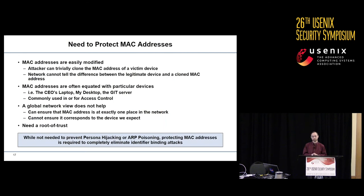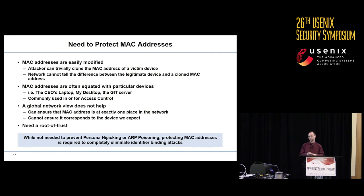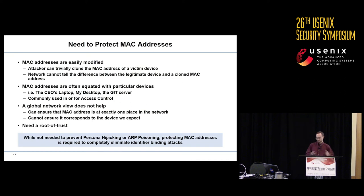The final thing we wanted from SecureBinder was to protect MAC addresses. MAC addresses are easily modified — attackers can trivially clone the MAC address of victim devices, typically with a one-line command on most operating systems, and the network can't tell the difference between the legitimate device and the cloned MAC address. This is important because MAC addresses are often equated with particular devices — the CEO's laptop, a desktop computer, the Git server — and this commonly ends up being used for access control, possibly indirectly through a static DHCP lease and an IP address. A global view can ensure a MAC address is at exactly one point in the network, but cannot ensure it corresponds to the device we expect.